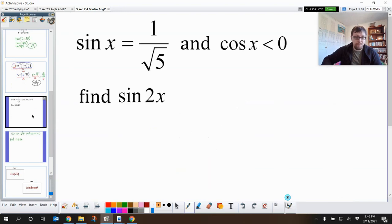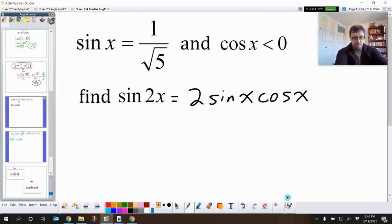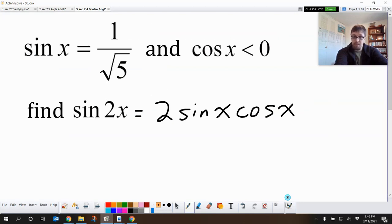So this equals, according to our sine double angle, it is 2 times the sine of x times the cosine of x. It's just my double angle identity. And hey, guess what? We already know this. They gave it to us. How nice of them.